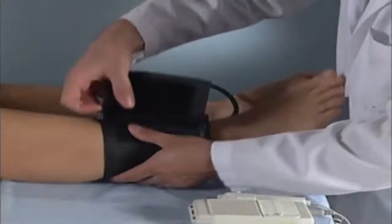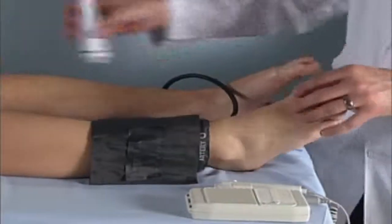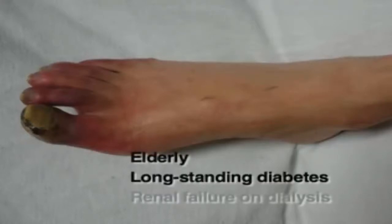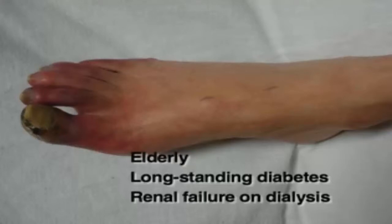There are limitations to the measurement of the ankle brachial index. These include the presence of a subclavian artery stenosis; if bilateral, this will falsely elevate the ankle brachial index. Calcified and incompressible vessels in the lower extremities will also falsely elevate the ankle brachial index. These conditions are often found in the elderly, in patients with long-standing diabetes, and in patients with renal failure who are on dialysis.